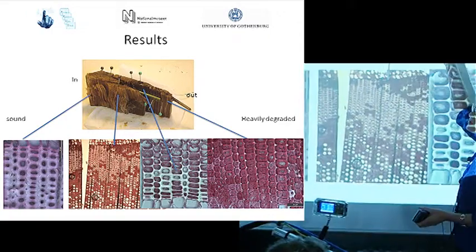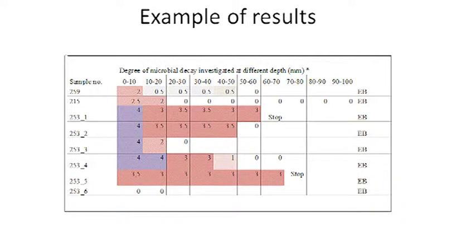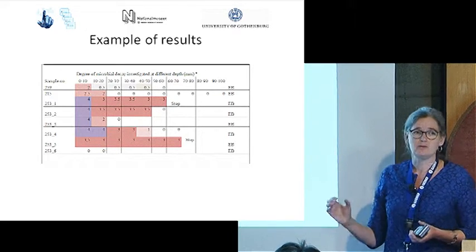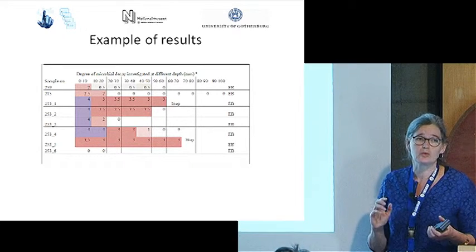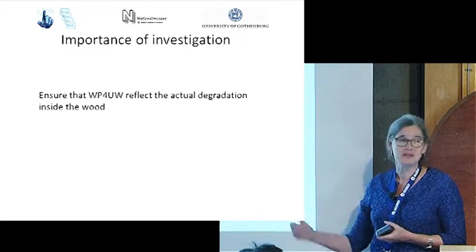Here you can see some cells are very degraded — the structure is very loose. And if you go further into the wood, there are some fresh areas and some degraded, and far in you will see sound wood — it's all in the same piece of wood. I could see that the erosion bacteria were in the main part of the samples. You can see it in cross section and in longitudinal sections — here is soft wood with all these dots in the secondary cell wall. At the end, I made tables where all this information and the degree of degradation from outside to inside were given certain numbers.